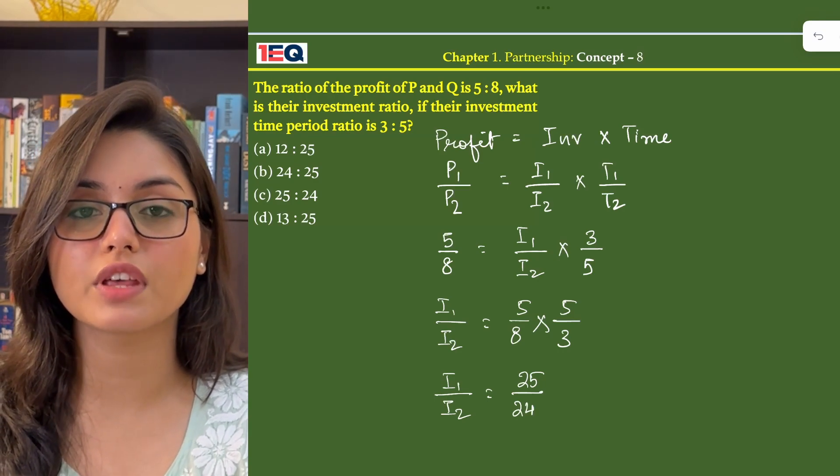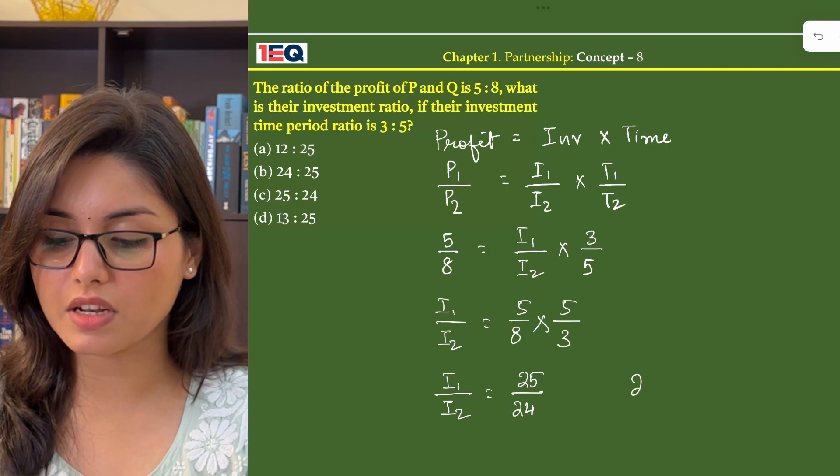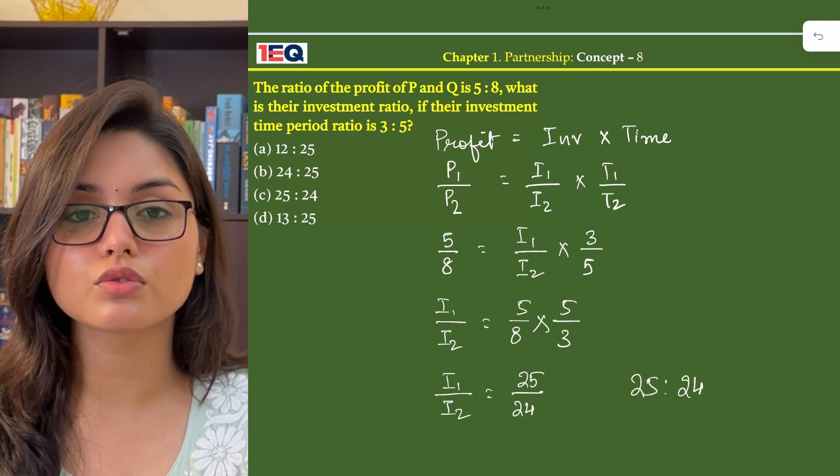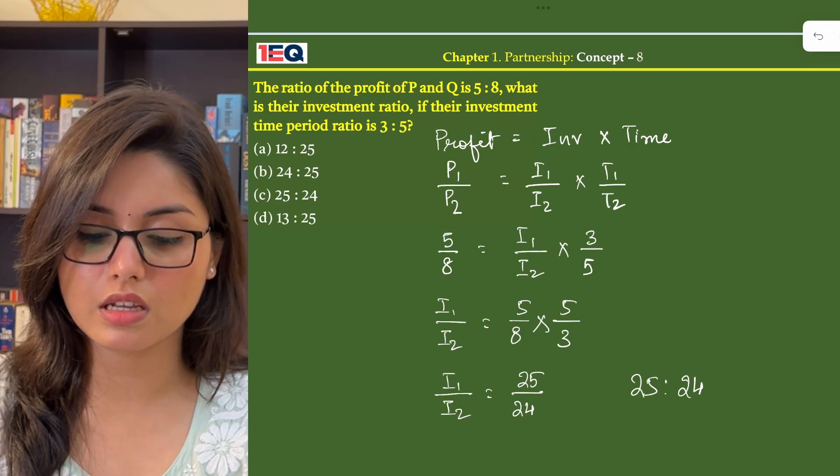That means the ratio of their investment is 25 is to 24. So the answer to this question is option C.